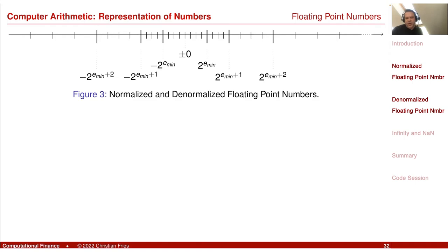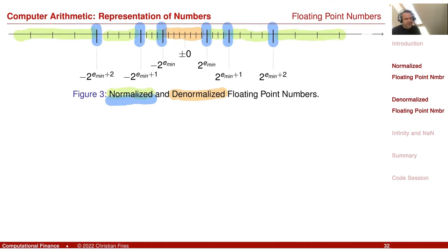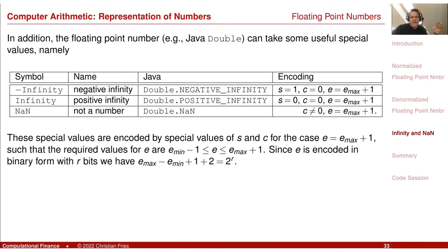Here you see the picture of the normalized and denormalized floating point numbers together. The denormalized ones fill in the numbers near zero, and the normalized floating point numbers cover all the other intervals. The scales are shown in blue, giving a very nice discretization.